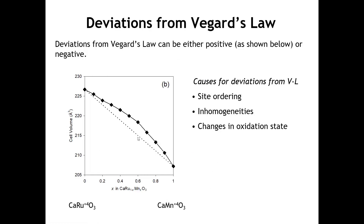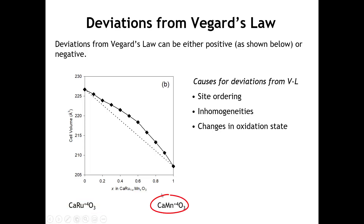Sometimes there are deviations from Vegard's Law — not all solid solutions obey it. Actually, my thesis advisor told me that Vegard really thought this relationship shouldn't be true. And somewhat ironically, when the relationship is linear, it's named for him. Here's an example from my own research of a solid solution that does not follow Vegard's Law. We were looking at solid solutions between two perovskites: calcium ruthenium O3, which contains ruthenium 4+, and at the other end calcium manganese O3, which contains manganese 4+. What we observed is that in the middle, we had a positive deviation from Vegard's Law — the lattice parameter curve bows upward above the linear fit.